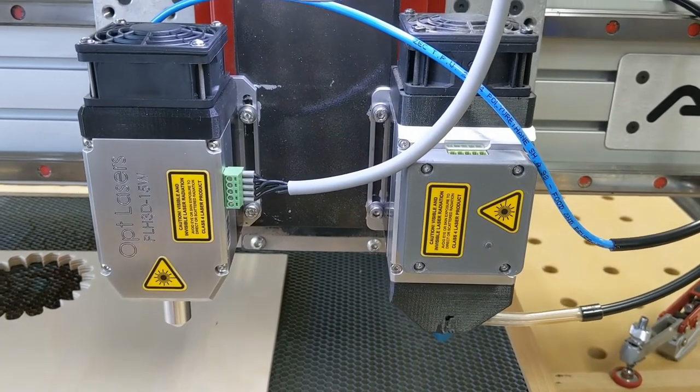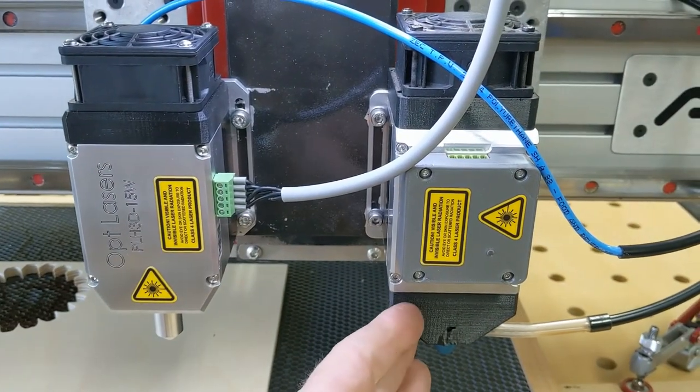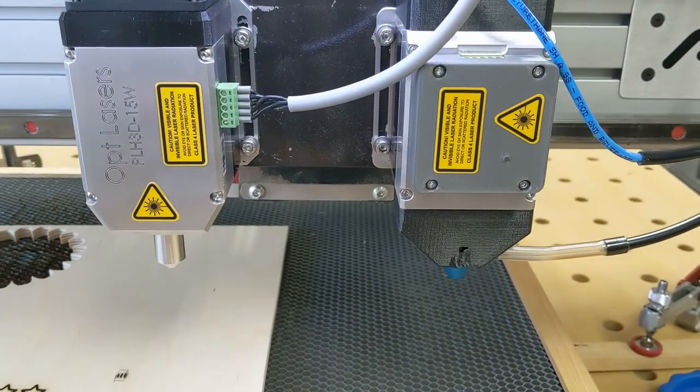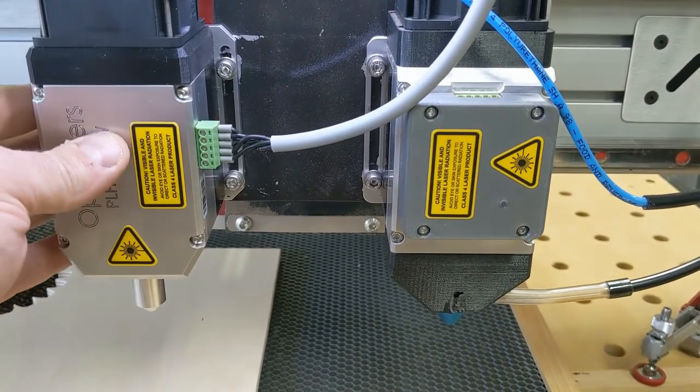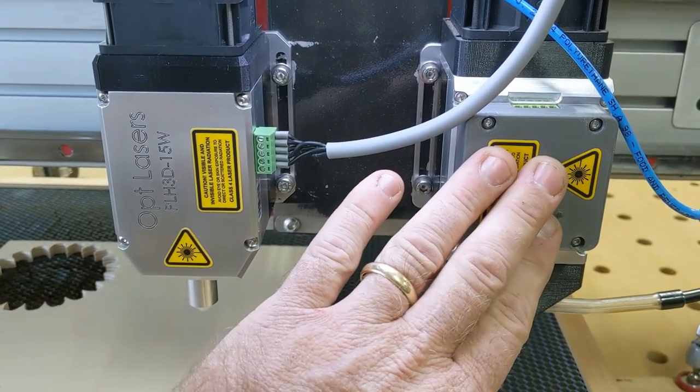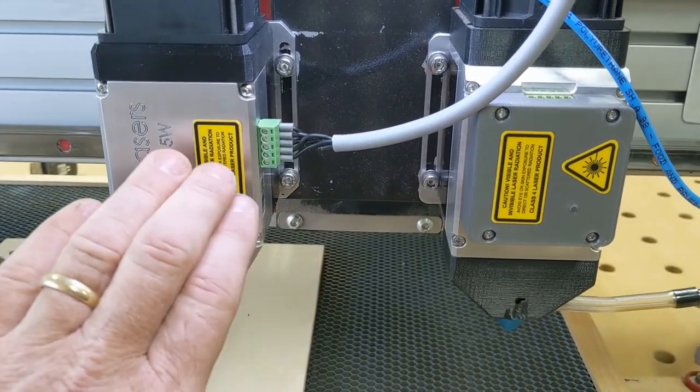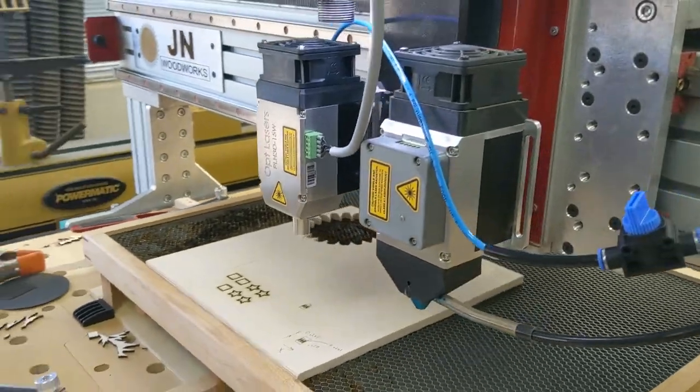The production one's here on the left and the original prototype that I did a couple videos on here on the right. Again, to recap the main things are kind of a cleanup of the case. This protrusion in the front where some of the electronics and the connector were has now been embedded deeper in the case. You can see from the side profile that the new laser is a little bit thinner in the forward to back direction.